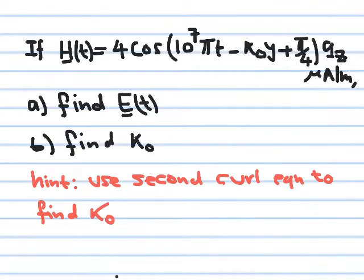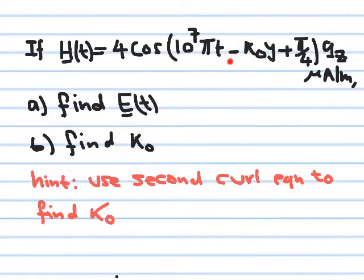We have here this magnetic field H of T, given by the expression: H of T equals 4 cosine(10^7 π t minus k_naught y plus π/4) a_z micro-ampere per meter. This is an electromagnetic wave traveling in the y-direction because of the negative sign, and the magnetic field has a component in the z-direction.